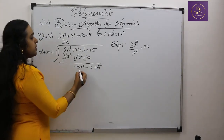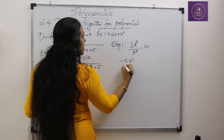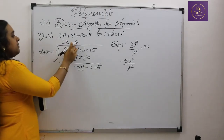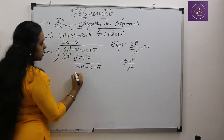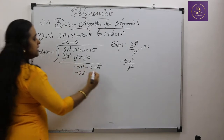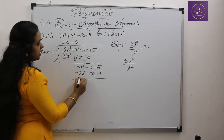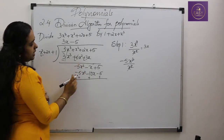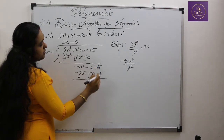Now we repeat the step. We divide the first term of the new dividend −5x² by x² from the divisor, giving −5. We multiply −5 by each term of the divisor: −5 × x² = −5x², −5 × 2x = −10x, −5 × 1 = −5. Subtracting (signs change): −5x² + 5x² = 0, −x + 10x = 9x, 5 + 5 = 10.